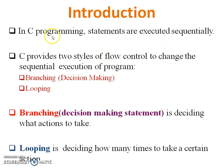In C Programming, top-bottom approach, statements are executed sequentially. C provides two styles of flow control to change the sequential execution of a program. One is branching or decision making, which is deciding what action to take on a particular bunch of statements or on a single statement. Second one is looping. Looping is deciding how many times to take a certain action on a particular statement or bunch of statements.